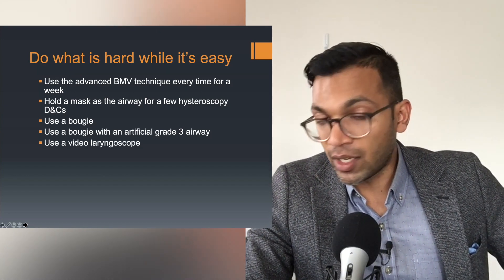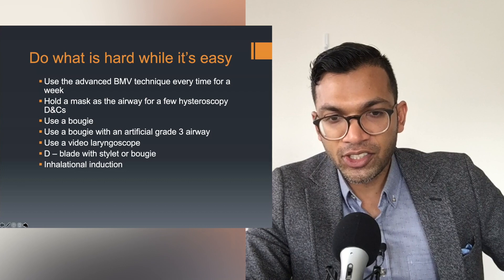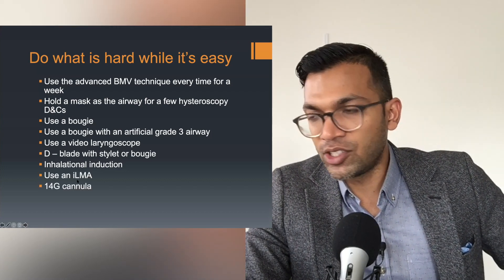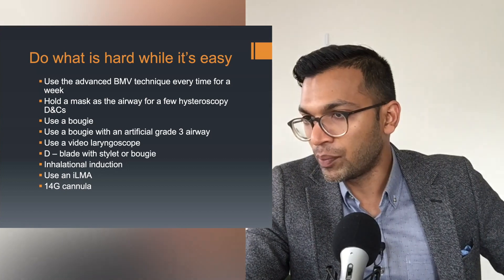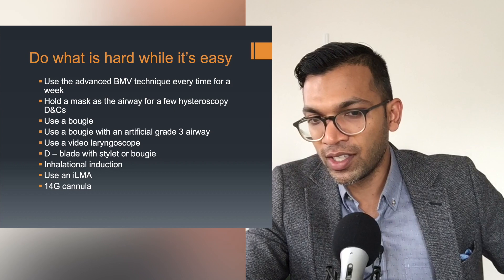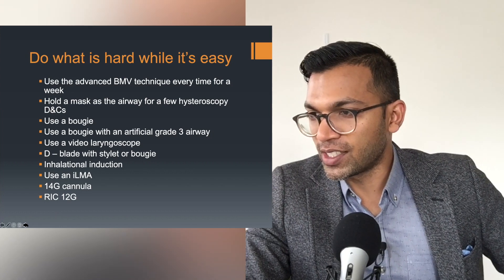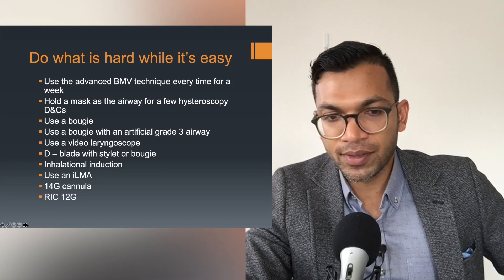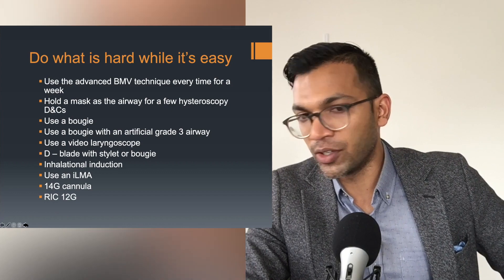Use a video laryngoscope with a D-blade and a stilette or bougie. Try an inhalational induction, use an intubating LMA, or use a 14-gauge cannula for IV access electively - do what's hard while it's still easy. When you actually need a 14-gauge for a massive transfusion, you'll already have done it several times. Use your judgment, talk to your consultant, get the basics right first and then quickly advance. Don't get bogged down perfecting the basics if you're already pretty good at them.